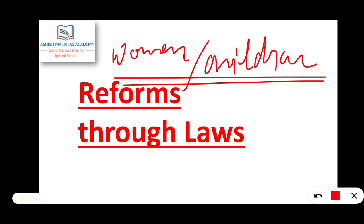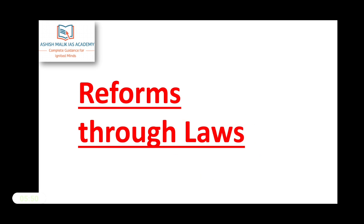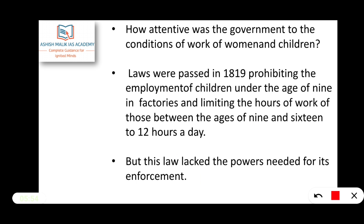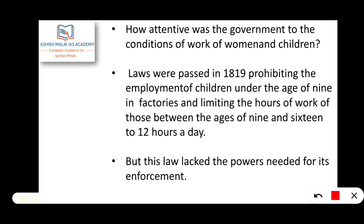Children and women were easily suppressed and their demands regarding working conditions were not heard. The working environment did not have reforms due to some laws being inadequate. The question is: how attentive was the government to the conditions of work of women and children? Women and children working in those industries were in a bad situation. Basically, laws were passed in 1819 prohibiting the employment of children.